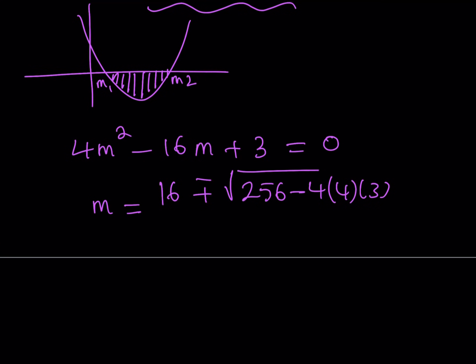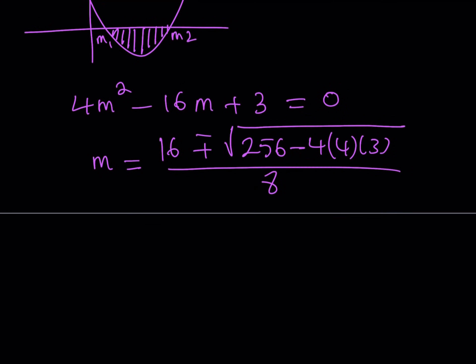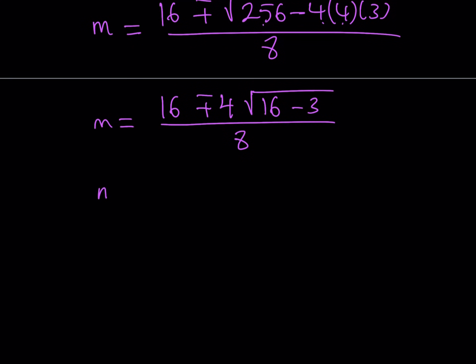Now, obviously, to make it a little easier on ourselves, and this is going to be 2a, we can just factor out a 16 here, obviously, because 256 is divisible by 16, and 4 times 4 is 16. So I can easily pull out a 16, which means I'm going to get a 4 outside the radical. And inside, since we divided by 16, this should be a 16, and this should be a 3.